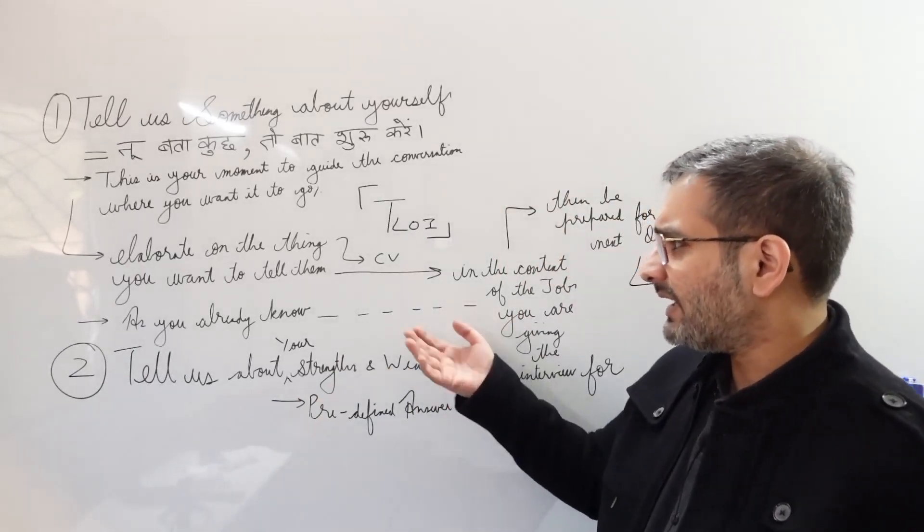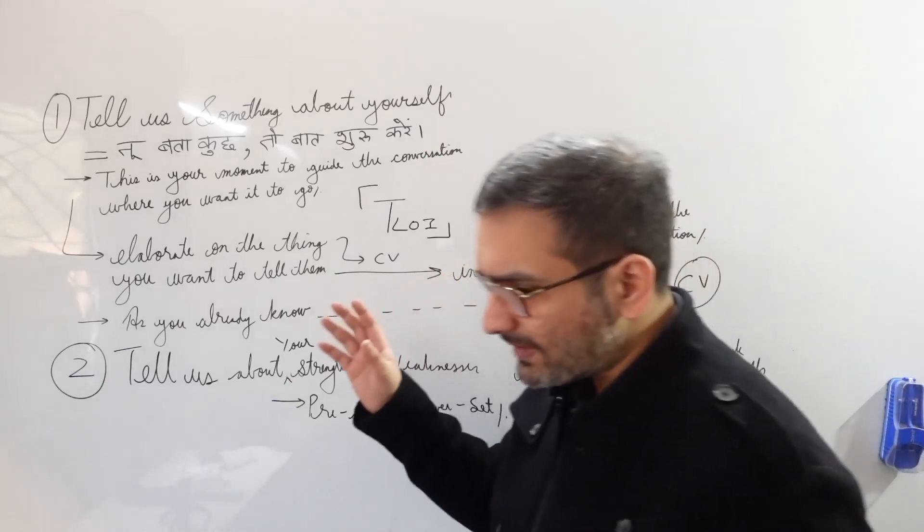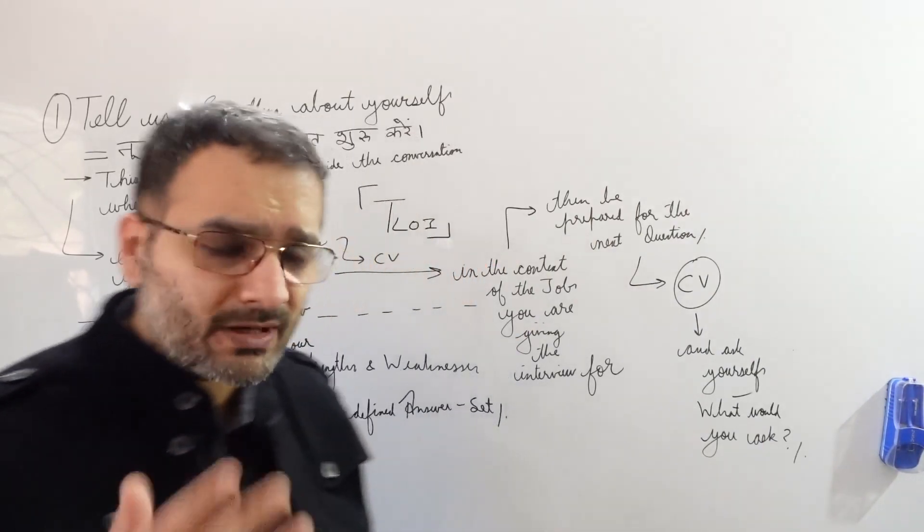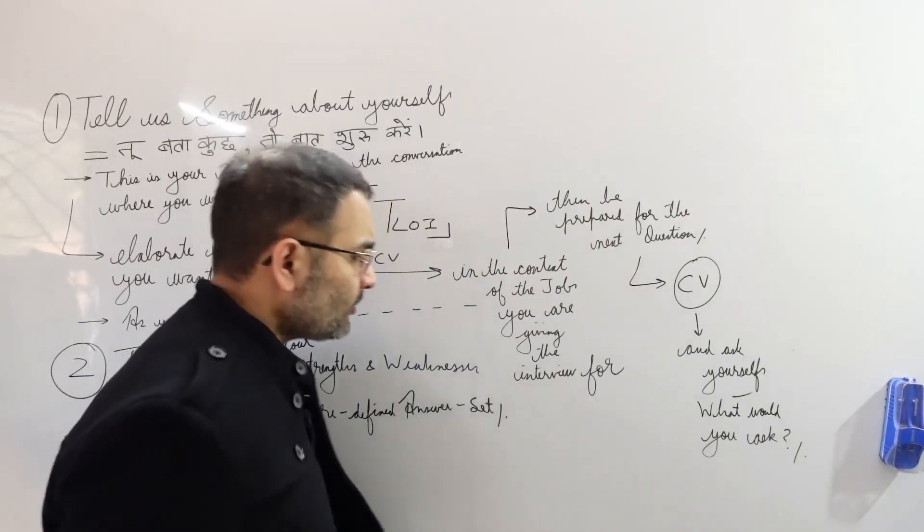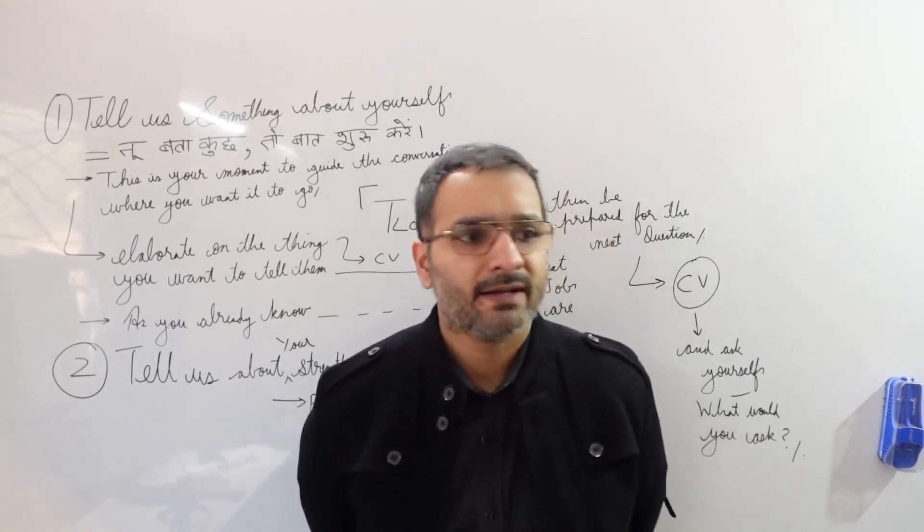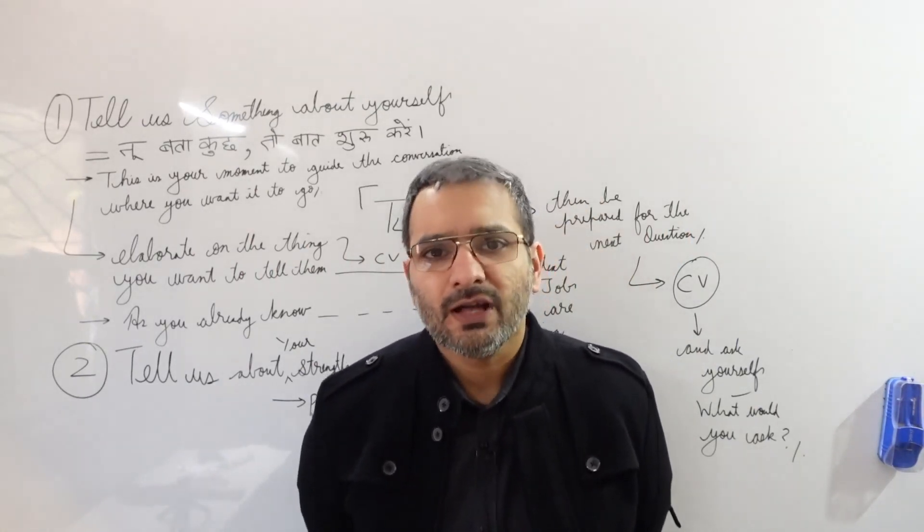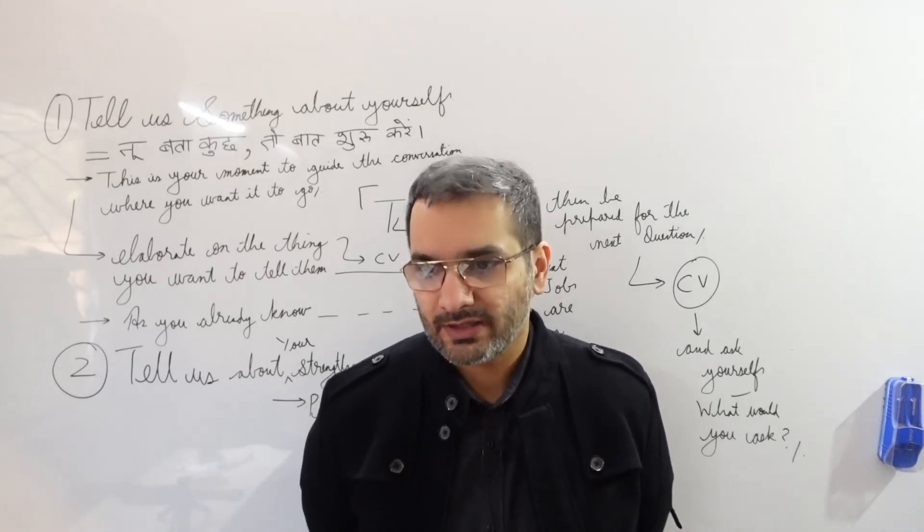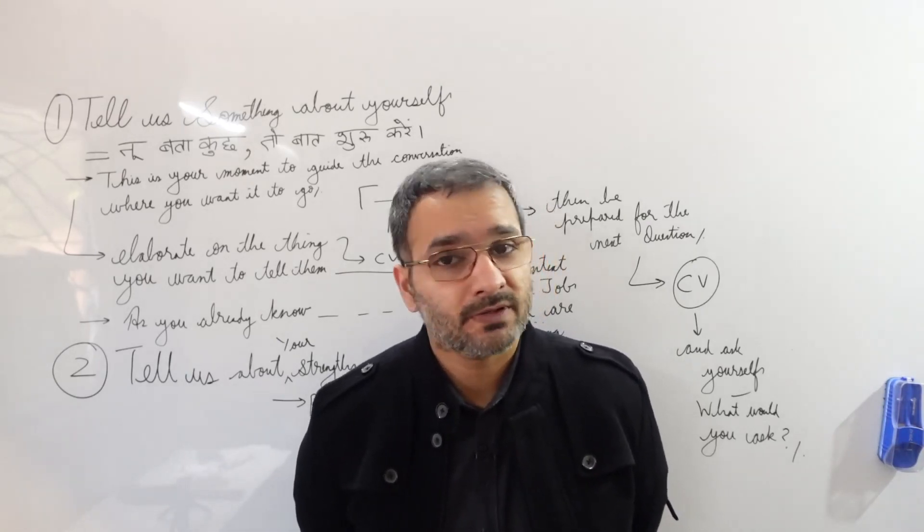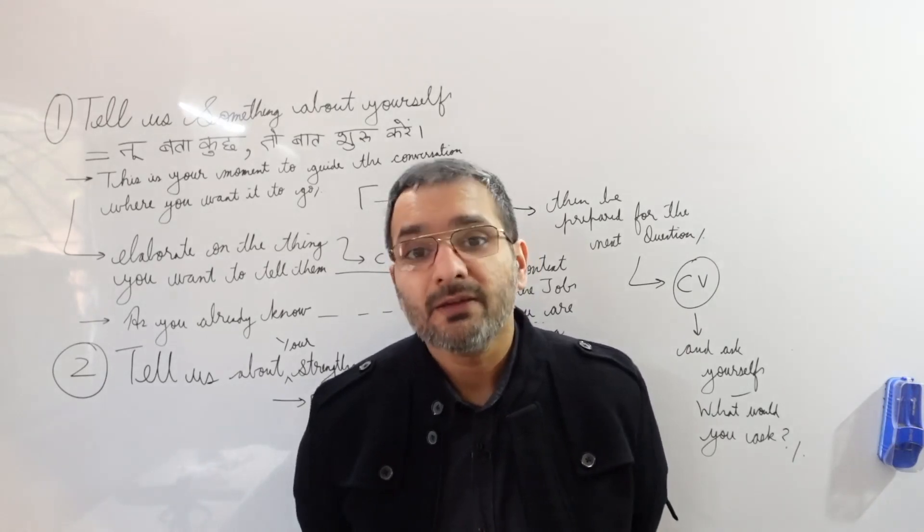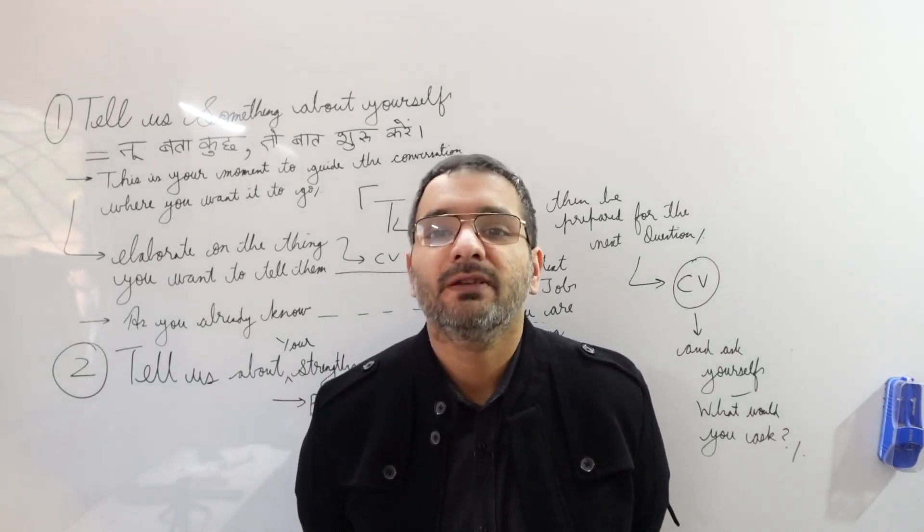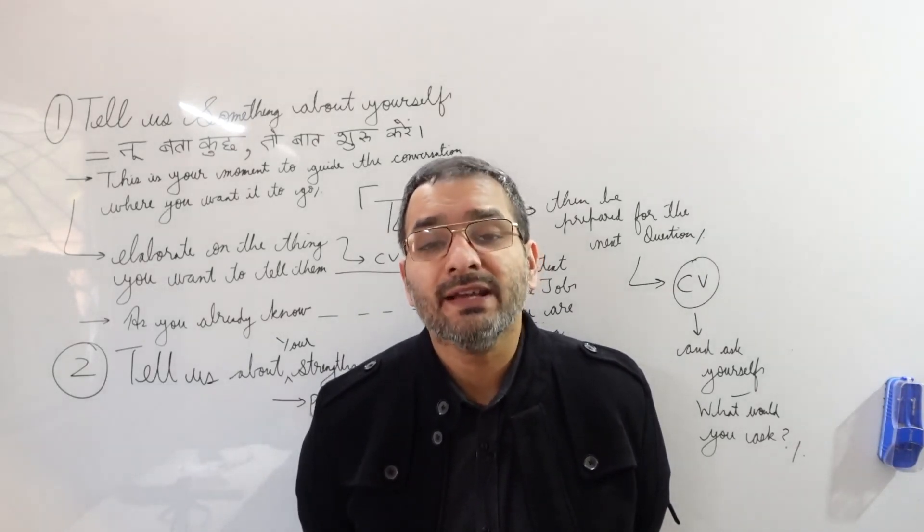So you can start off as you may already know, and then you elaborate on the thing that you want to tell them. At the beginning level, at the fresher level, you may just not be able to do this, but later on you always elaborate in the context of the job you are giving the interview for. For example, let's say that I apply for a professorship at Delhi University or at NLU. I will focus on my teaching experience here at TLY and the other teaching experience that I have in teaching special children for their National Open School examinations for the 10th and 12th standard, because that is relevant here. I may just not want to enter into details about my other businesses that I have attempted in life because that is irrelevant for their purpose.